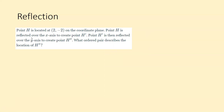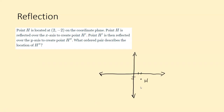This last reflection problem does not give us a graph. Point H is located at (2, negative 2) on the coordinate plane. Point H is reflected over the x-axis to create point H prime. So I'm going to draw a coordinate plane. We reflected over the x-axis, so instead of two points below, now it's two points above — nothing changed left to right yet. That is H prime.